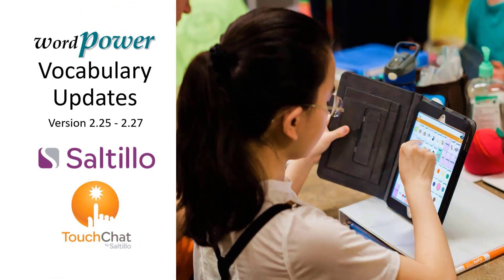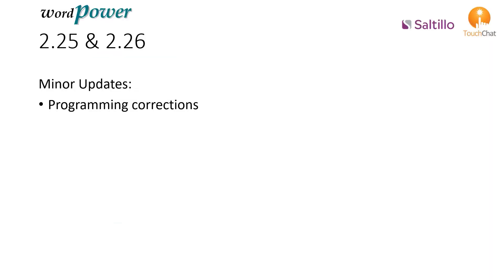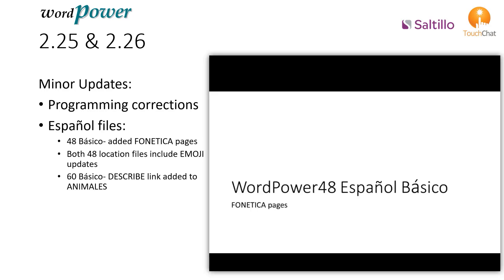Let's take a look at what is new with WordPower in Updates 2.25, 2.26, and 2.27. In Updates 2.25 and 2.26, there were a few minor changes. In general, programming corrections were completed.